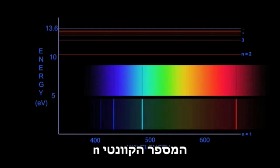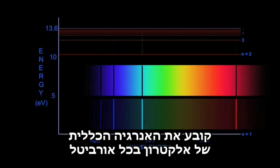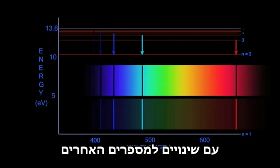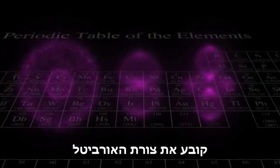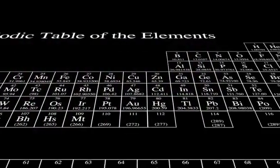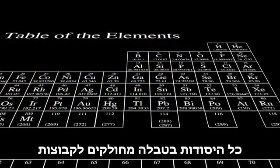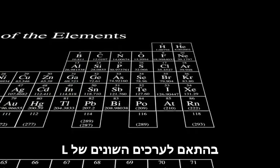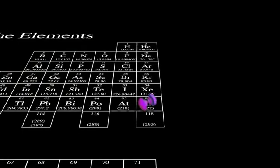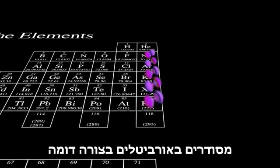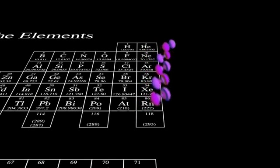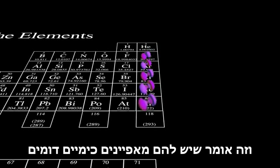The quantum number N determines the gross energy of the electron in each orbital, with some adjustments for the other numbers. And the quantum number L determines the shape of the orbital. All of the elements in the table are arranged into groups based on different values of L. Elements in a given column have their outer electrons in similarly shaped orbitals, and this means they have similar chemical properties.